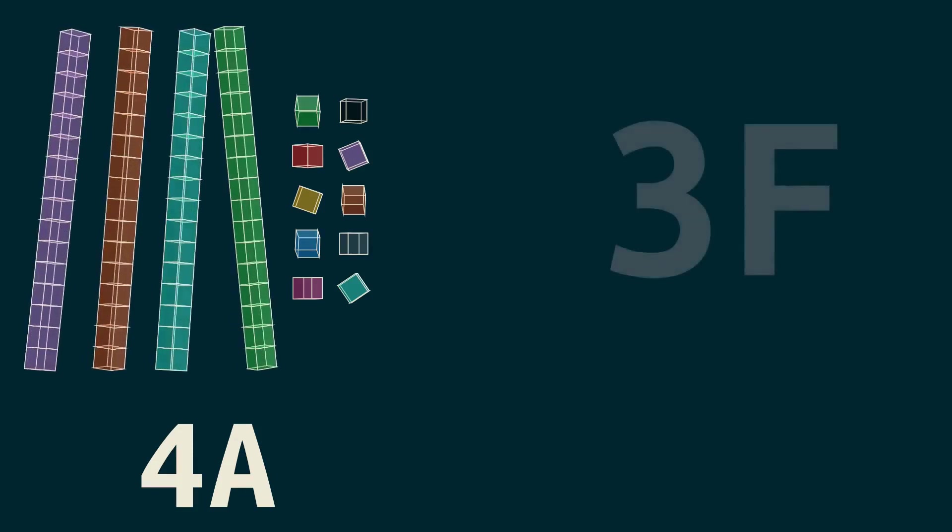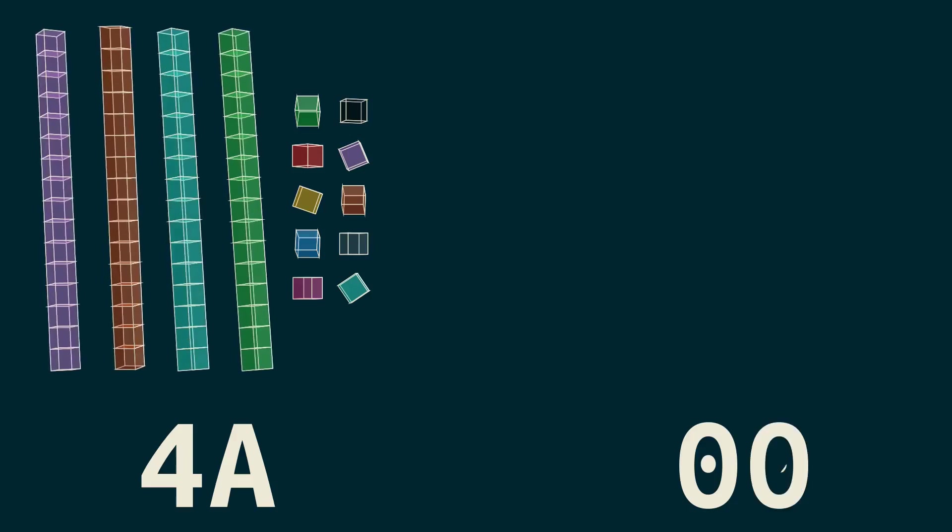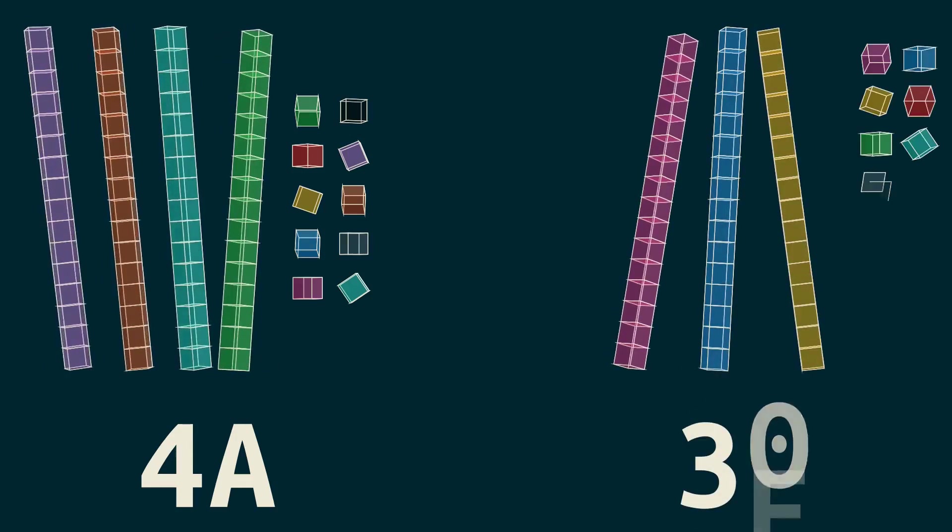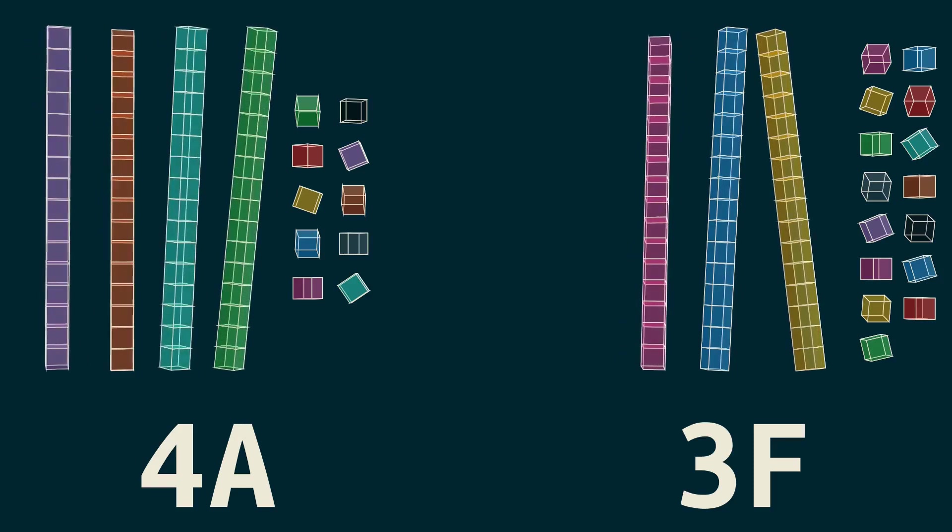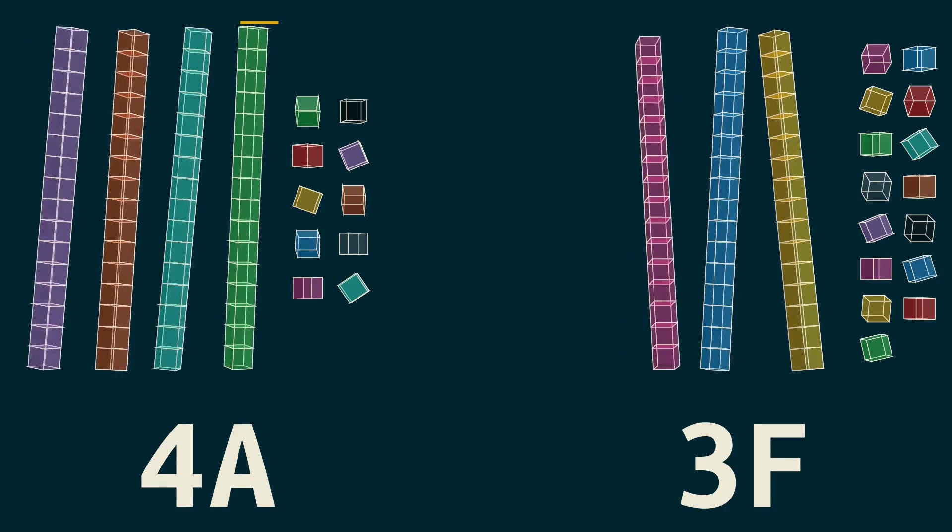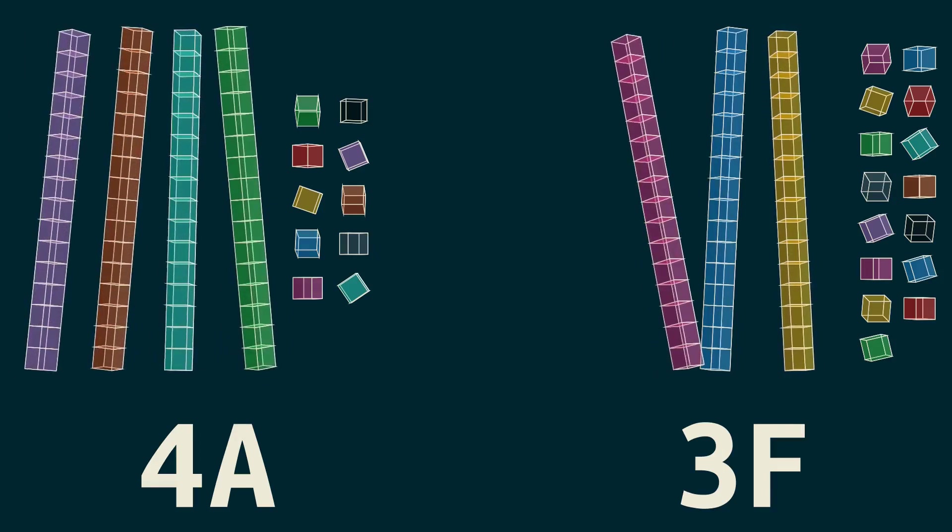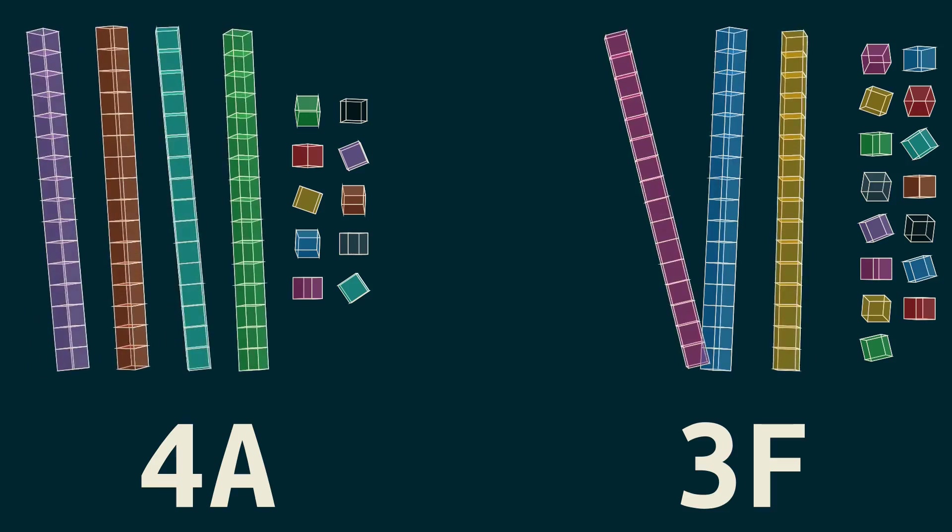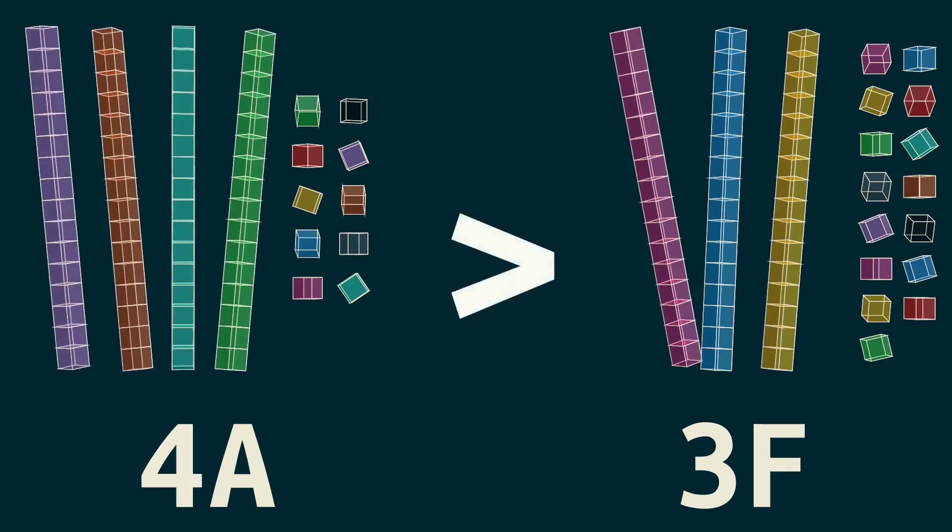What would 3F look like? Pause the video and visualize it if you'd like. But it means we have 3 sticks of 16 and 15 little cubes besides that. Now which one's bigger here? You don't need to multiply anything to know the answer to that. We have 4 sticks on this side. And 4 sticks is bigger than 3 sticks plus some number of extra cubes that weren't enough to make a full stick. The left side's clearly bigger. So 4A is greater than 3F.